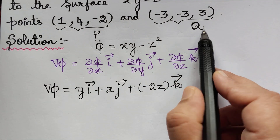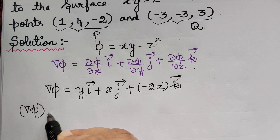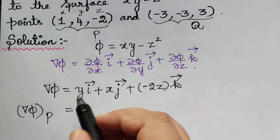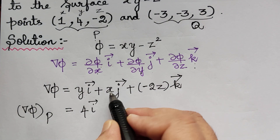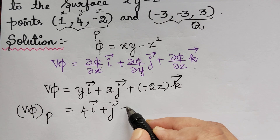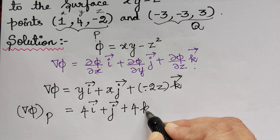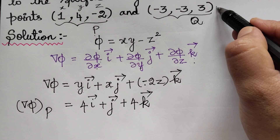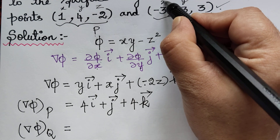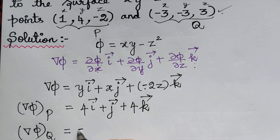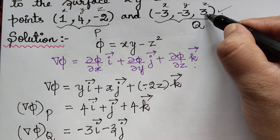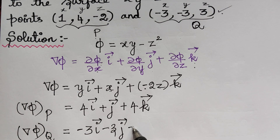Now we have two different points P and Q. For nabla phi at point P(1, 4, -2): y is 4, so 4i; x is 1, so j; z is -2, so -2 times -2 gives +4, so 4k. Thus nabla phi at P = 4i + j + 4k. For nabla phi at point Q(-3, -3, 3): y is -3, so -3i; x is -3, so -3j; z is 3, so -2(3) = -6, giving -6k. Thus nabla phi at Q = -3i - 3j - 6k.